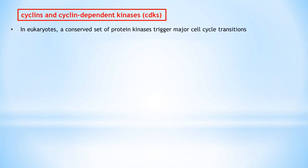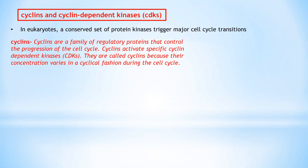Now let's understand cyclins and cyclin-dependent kinases. Studies have revealed that the cell cycle of all eukaryotes is controlled by a conserved set of protein kinases responsible for triggering the major cell cycle transitions. Cyclins are a family of regulatory proteins that control the progression of the cell cycle. Cyclins activate cyclin-dependent kinases or CDKs, which control cell cycle processes through phosphorylation.